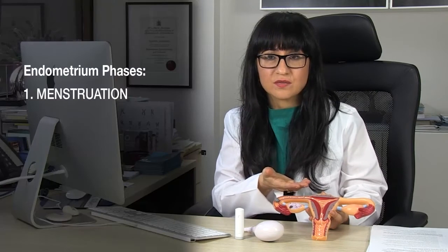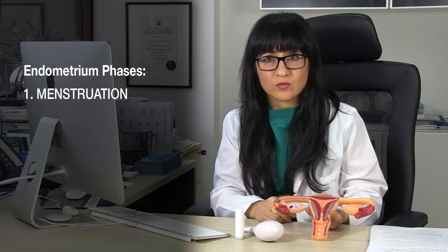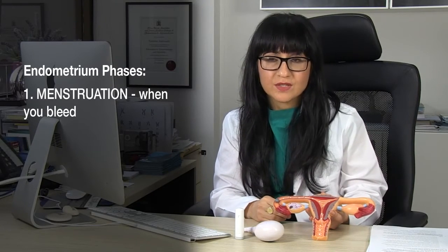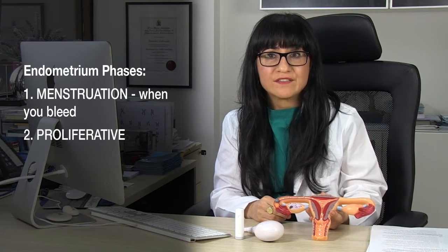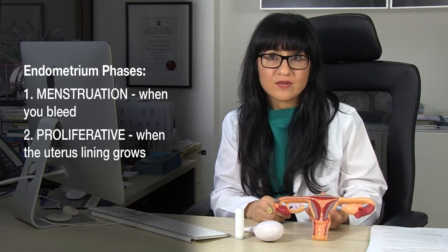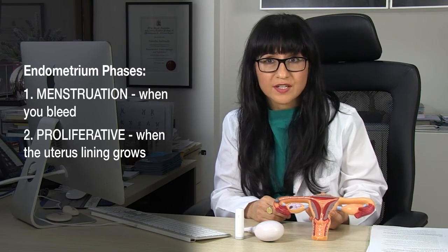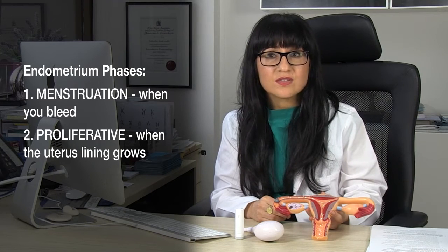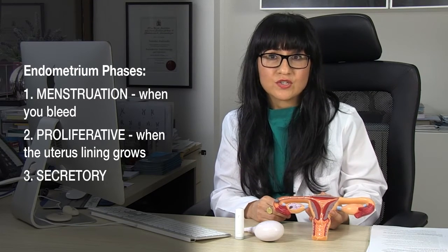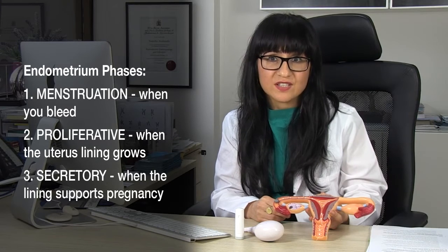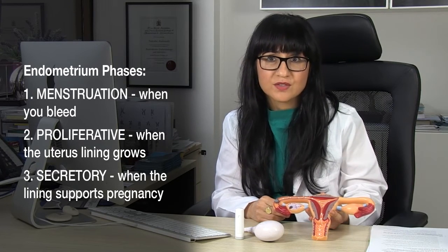At the same time that the ovary is going through its phases, the endometrium, the lining of the uterus, is doing its own thing as well. It too goes through three phases. The first phase is menstruation, when you've got a period. The second phase is what we call the proliferative phase, when there is the growth of the lining of the uterus. And then there is the secretory phase, which is when there's active activity to help that lining become very receptive to a pregnancy.